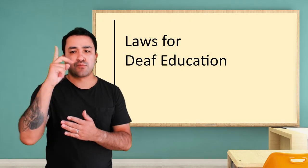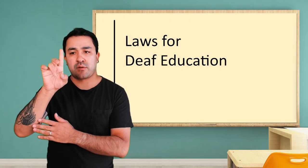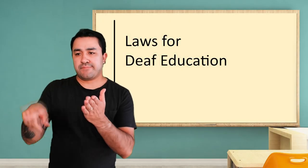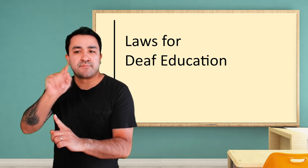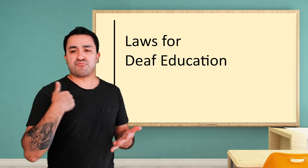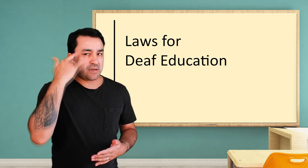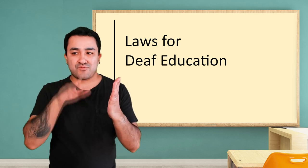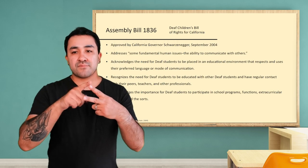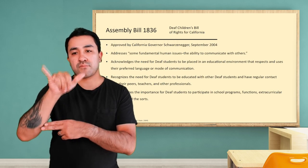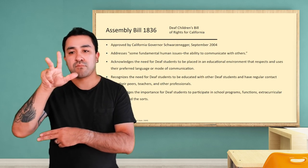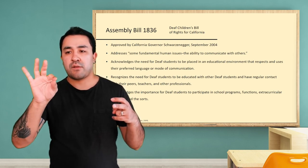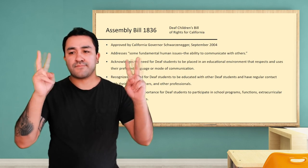The previous video covered important federal laws for students with disabilities. This video will cover two California laws that focus on deaf students. The first is Assembly Bill 1836, also known as the Deaf Children's Bill of Rights.